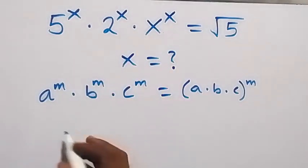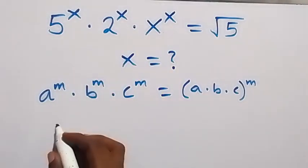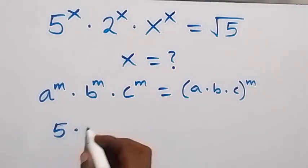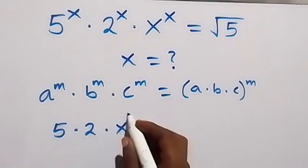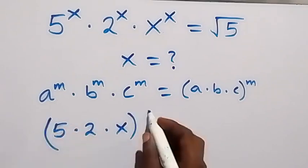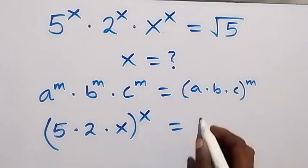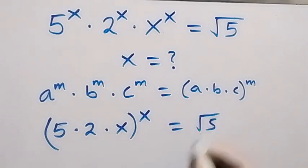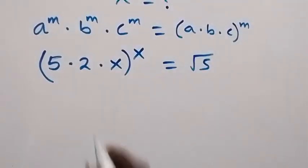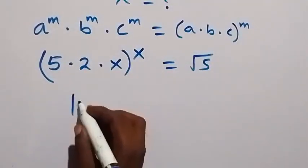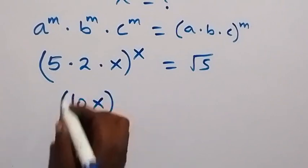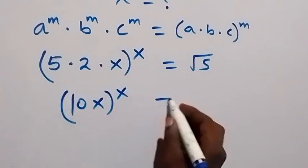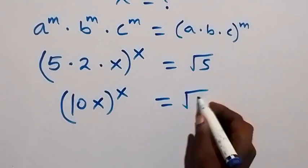Then we can write this in that form, and this will be 5 times 2 times x, raised to power x, equals to root 5. When we multiply this, this is 10x raised to power x equals to root 5.